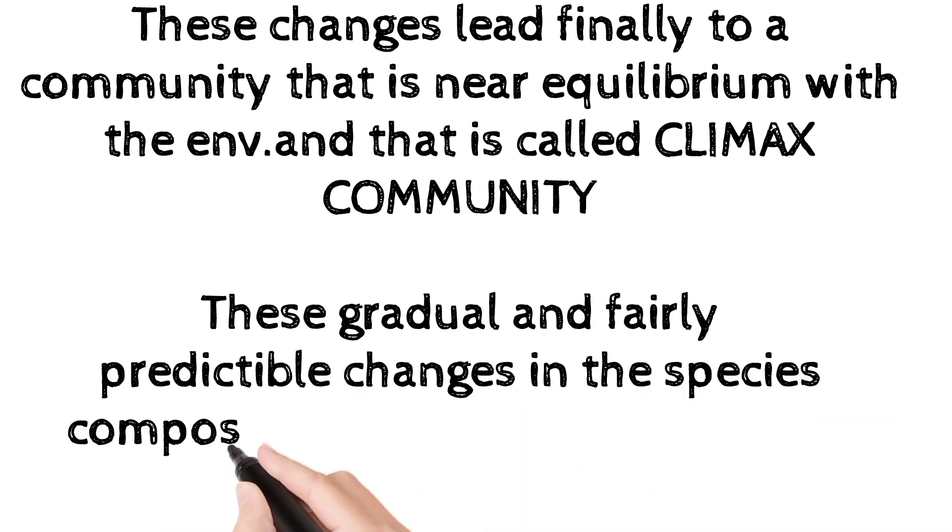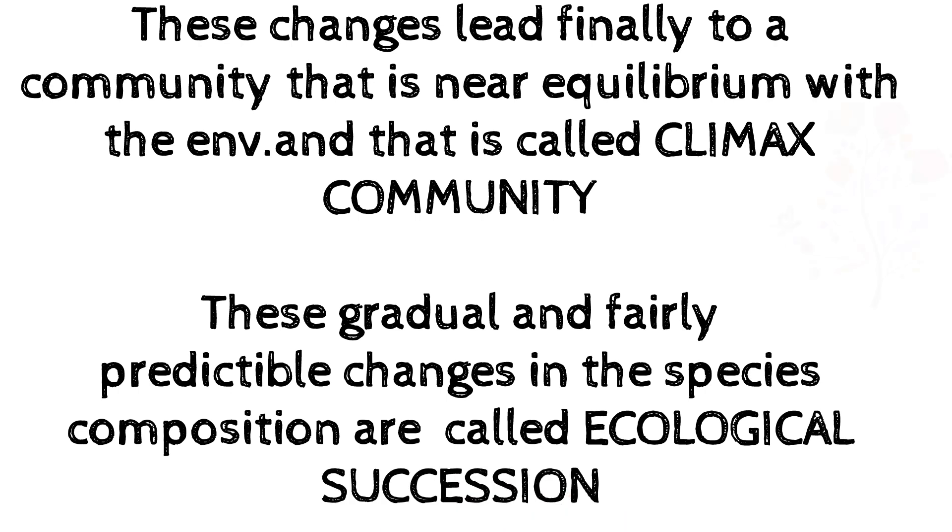These changes are called ecological succession. These gradually and fairly predictable changes in the species composition are called ecological succession.